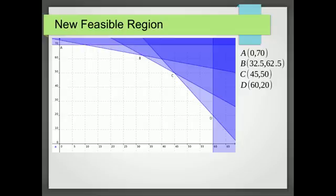But we can see that B has the coordinates 32.5 and 62.5. A hasn't changed. D hasn't changed. But C has got the coordinates 45, 50.